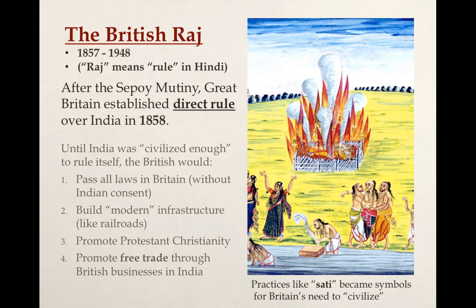Just as a review, the British Raj, after the Sepoy Mutiny, had direct control over India. This would last from about 1857 all the way until 1948, in which India would finally win its independence as several different independent nations.